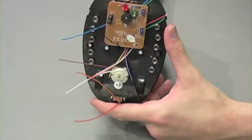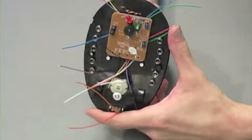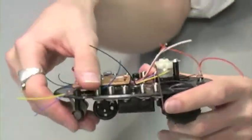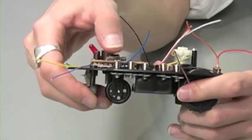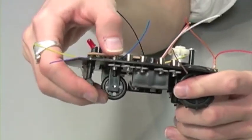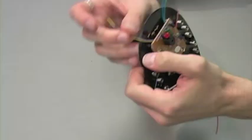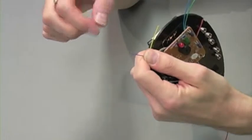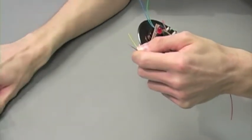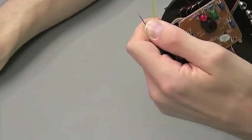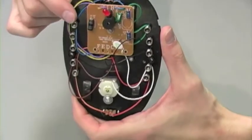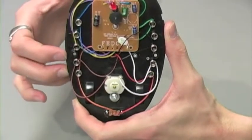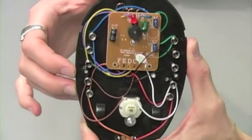Step four involves our wires. We're going to be attaching like colors underneath these little springs. You may find that you want to expose a bit more of the wire before doing this. Blue to blue, yellow to yellow, purple to purple, and so on. Step four complete.